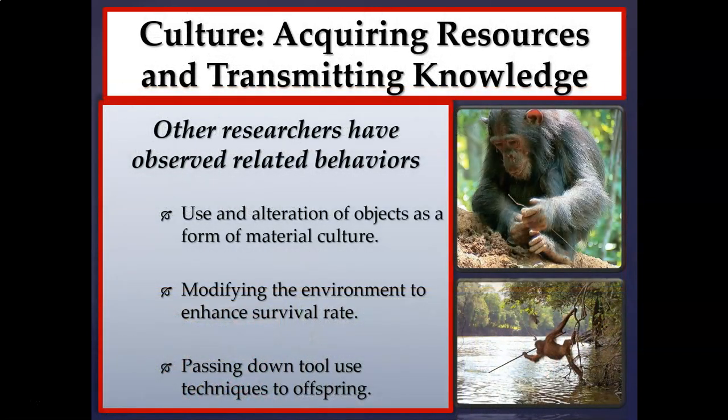Other researchers have also observed related behaviors in both captive and natural settings. Some definitions of culture include the use and alteration of objects as a form of material culture — altering objects found in the natural habitat, such as twigs, rocks, and leaves. There'll be examples of Japanese macaques washing sweet potatoes and using hot springs. Key questions to consider: are they modifying the environment to enhance their survival or reproduction, and is this a learned behavior passed down to offspring?